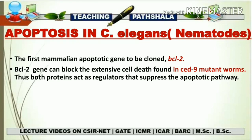BCL2 gene can block the extensive cell death that is found in CED9 mutant worms. That means if you have a worm showing a mutation in the CED9 gene and you inject BCL2 gene into that CED9 mutant worm, it will show a pathway in which there is suppression of the apoptosis pathway. So if CED9 is absent in a cell and we inject BCL2, BCL2 is going to perform the function of CED9 — that is suppression of apoptosis — because BCL2 is anti-apoptotic in mammals, just as CED9 is anti-apoptotic in the worm.